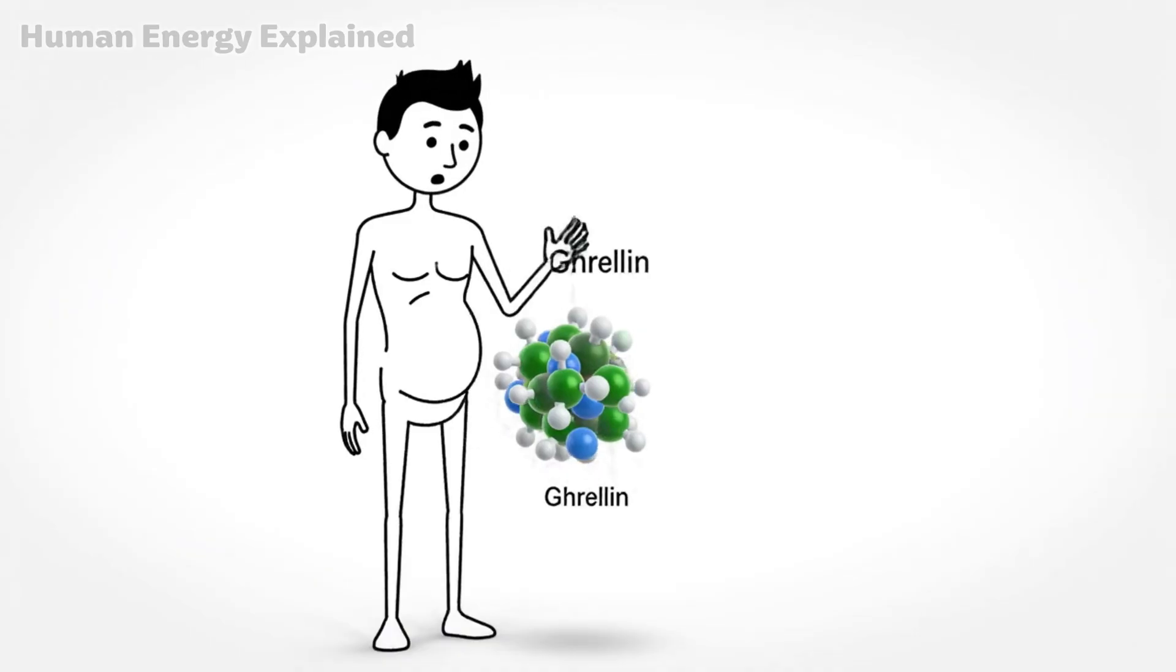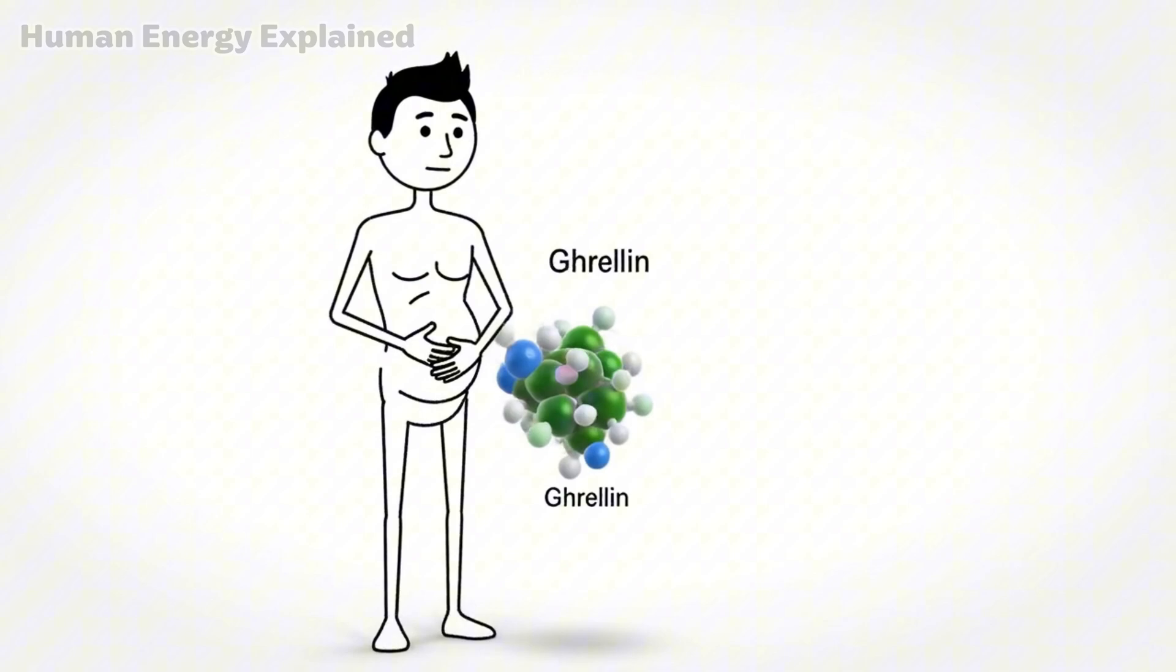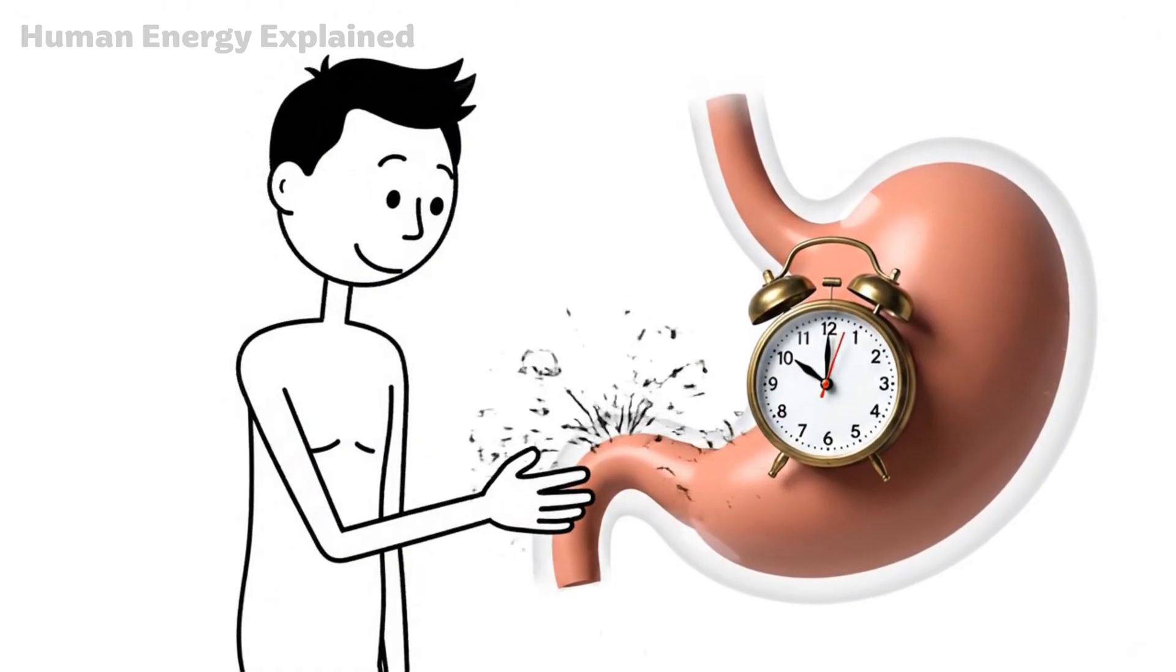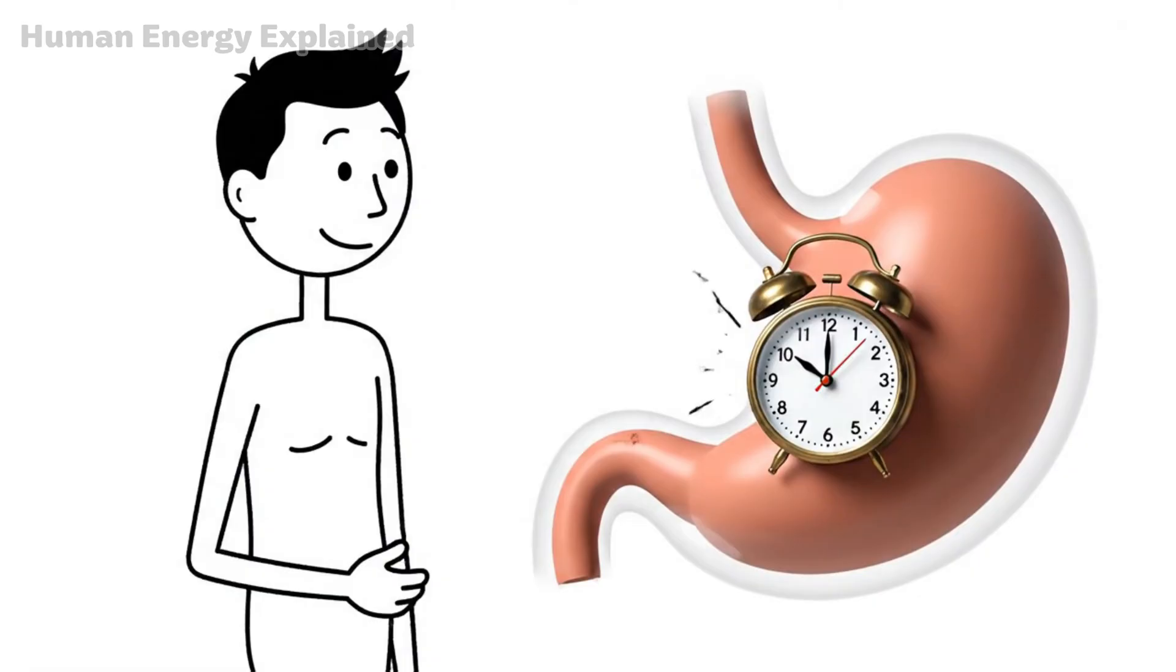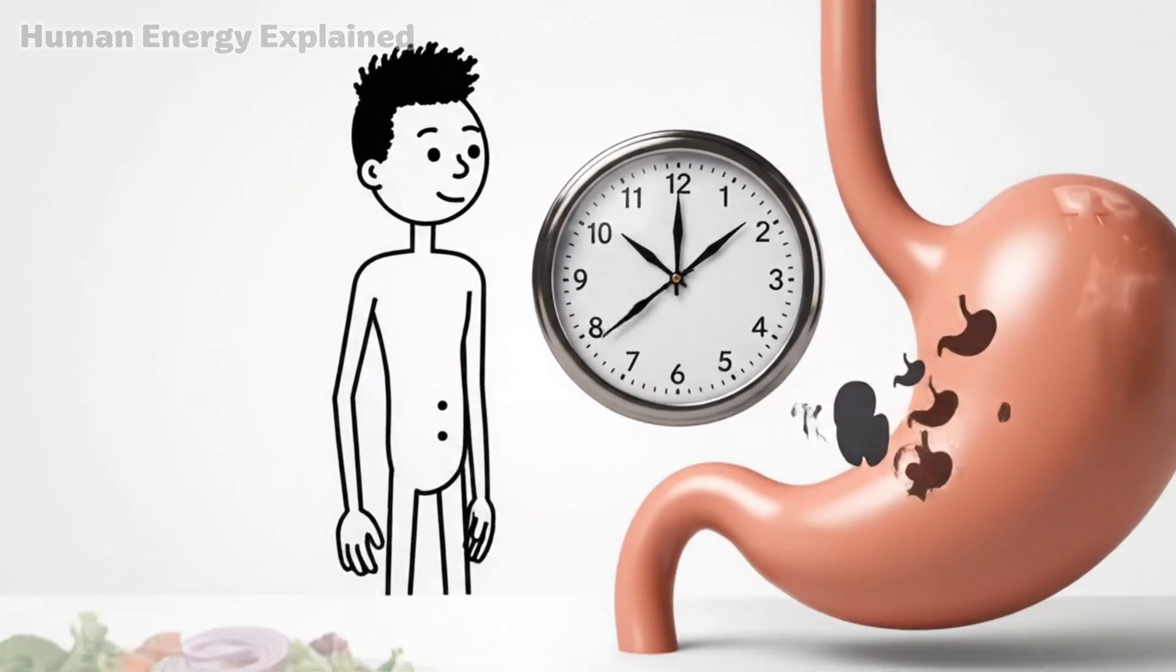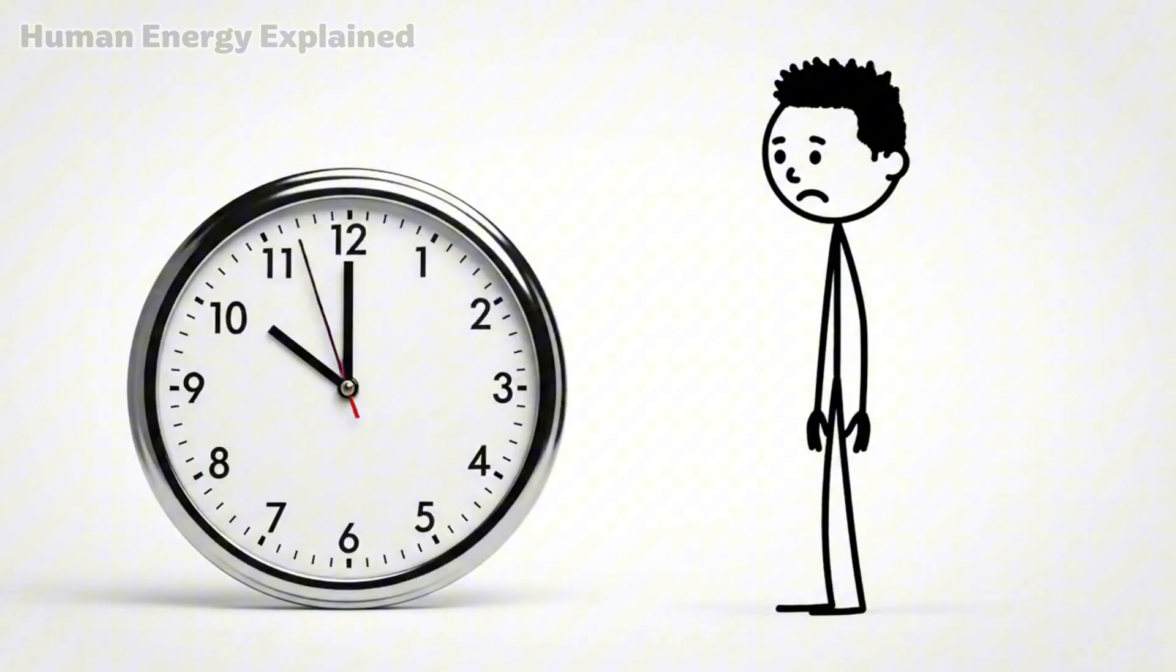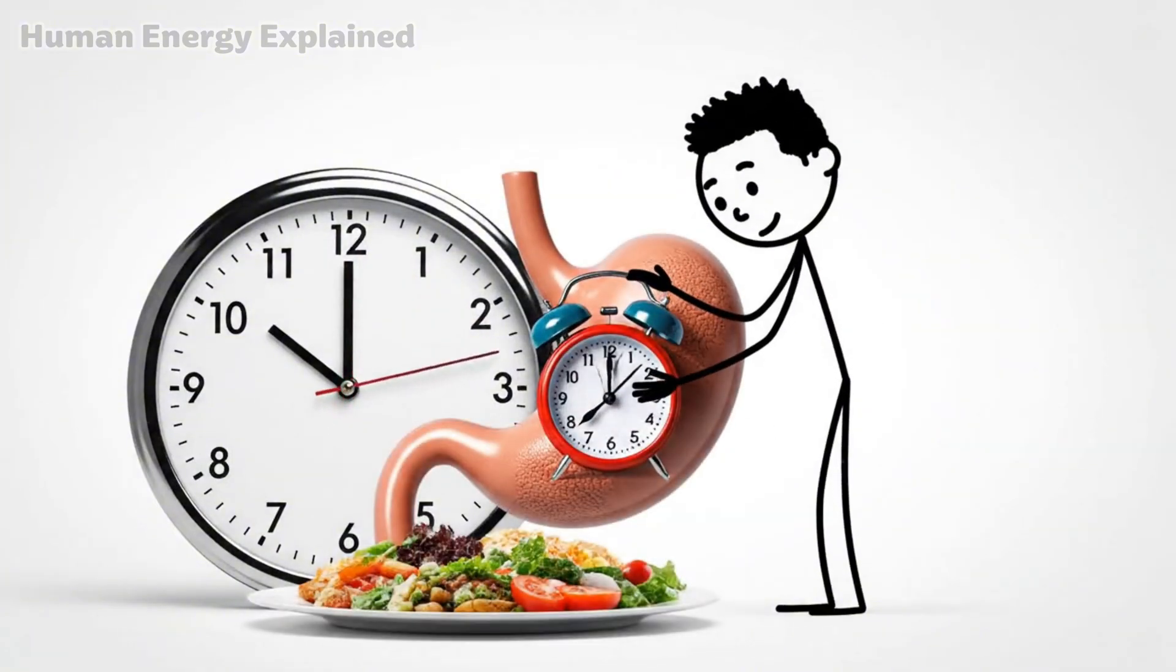There's a hormone called ghrelin. Often called the hunger hormone. Think of it as an alarm clock inside your stomach. It doesn't ring because you desperately need food. It rings because you trained it to ring at those specific times. You ate breakfast at 7am for years. So ghrelin fires at 7am expecting breakfast. You had lunch at noon for a decade. So your stomach growls at noon like clockwork.